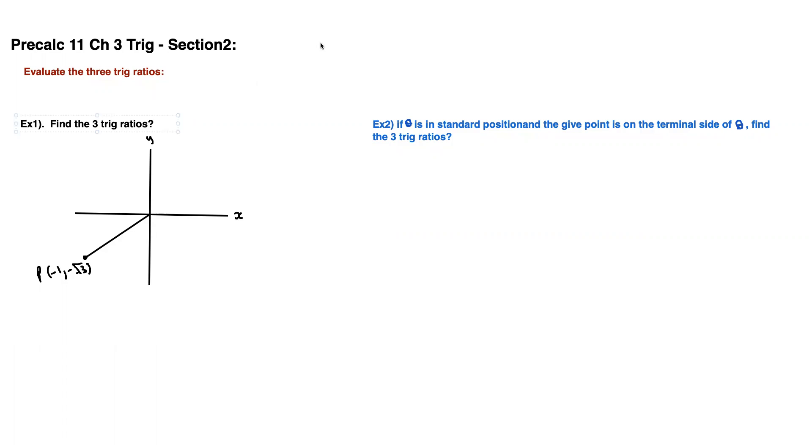We will use SOH-CAH-TOA to do so. Sine is opposite over hypotenuse, cosine is adjacent over hypotenuse, and tangent is opposite over adjacent.